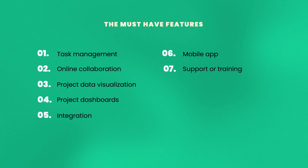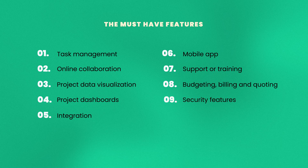Number six is the option to use a project management app, especially if your team works remotely or on the go. Number seven is considering if the product offers tech support or training to help you implement the software effectively. Number eight is ensuring the software has a system for budgeting, billing, and quoting — features for submitting and managing invoices and tracking time are a huge plus. And finally, number nine is checking to see if the tool comes with security features to protect your project, like data encryption, network security, and disaster recovery.